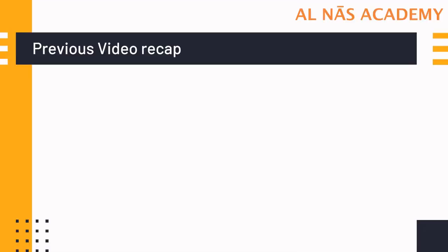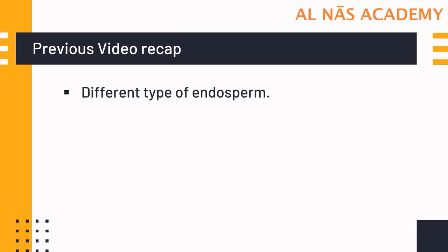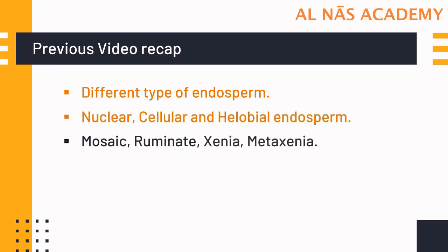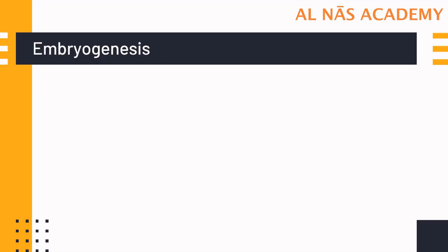Let's do a quick recap of our previous video. We studied the development of endosperm and the different types: nuclear, cellular, helobial endosperm, then mosaic, ruminate, xenia, and metaxenia. These were explained in detail in the previous video.